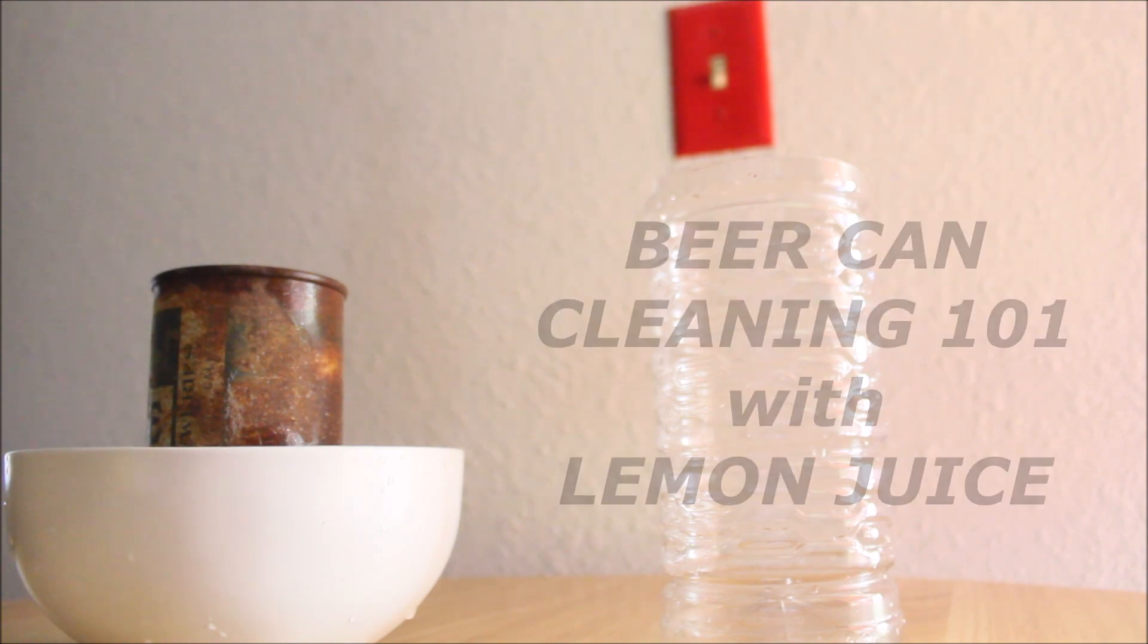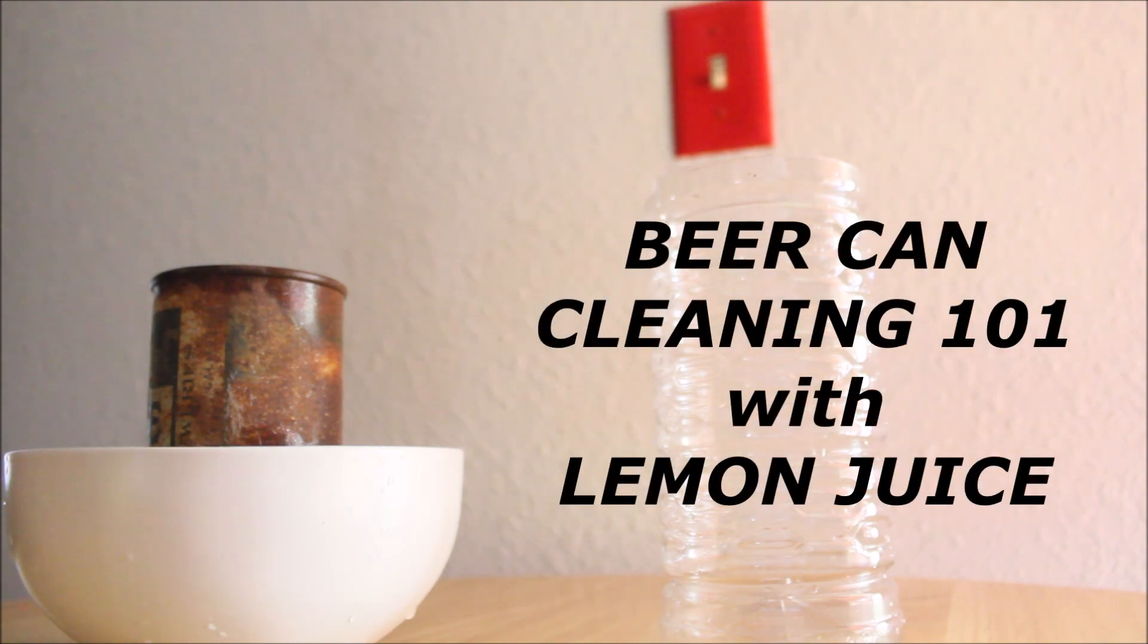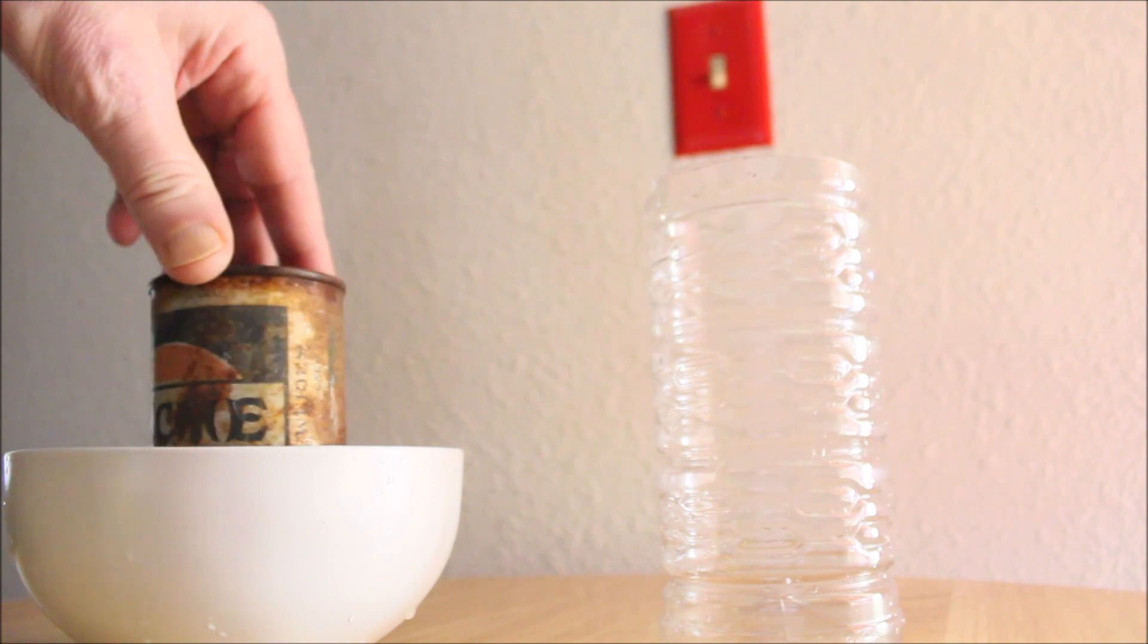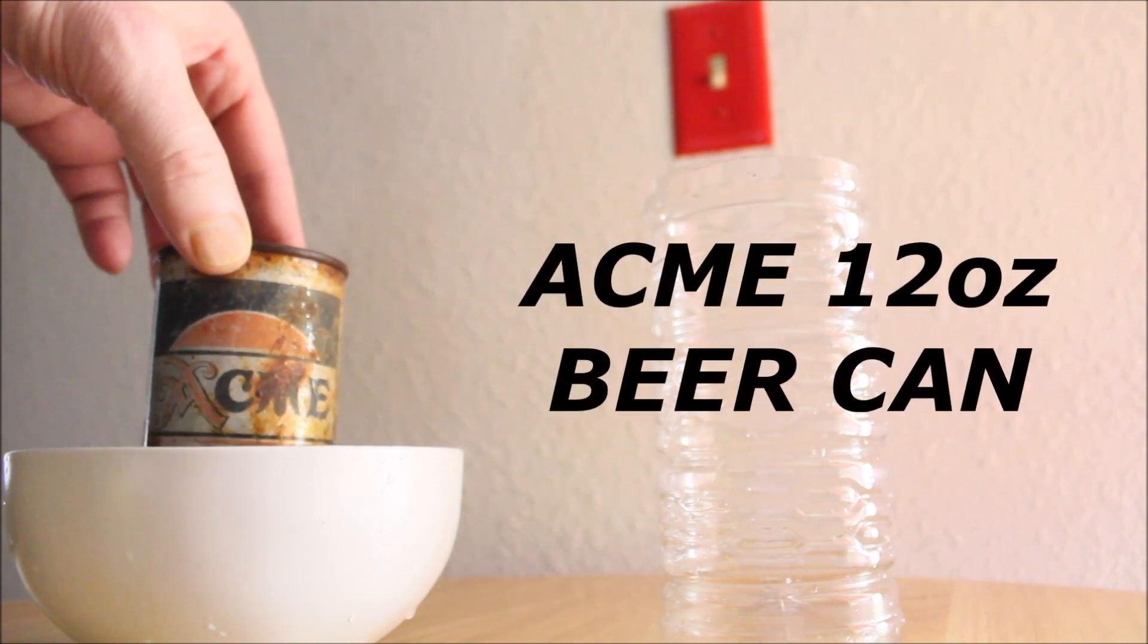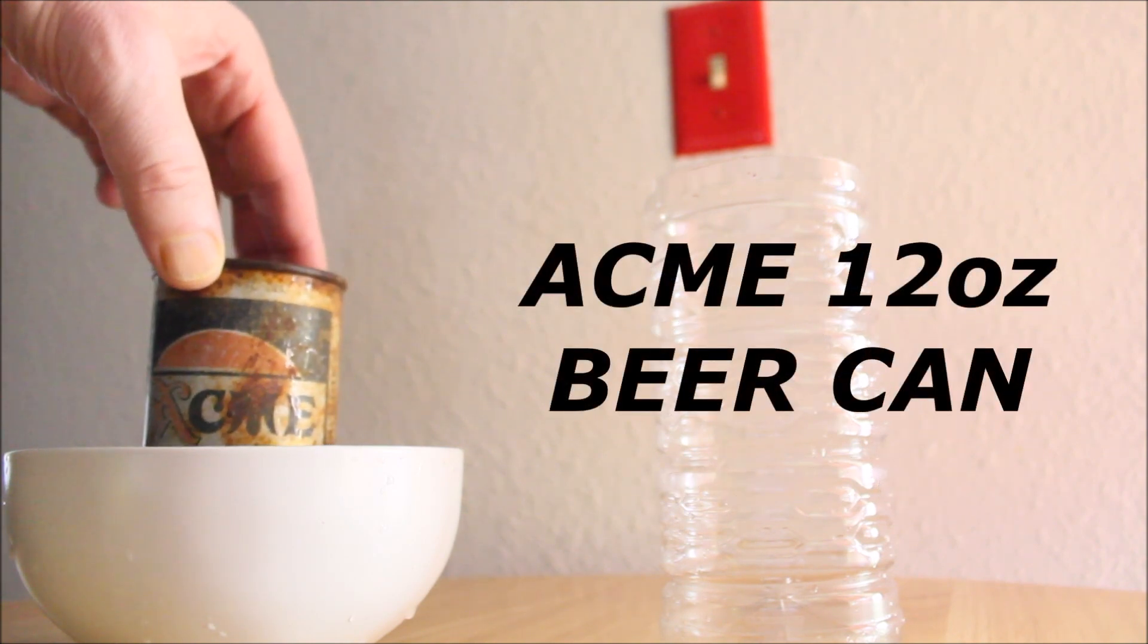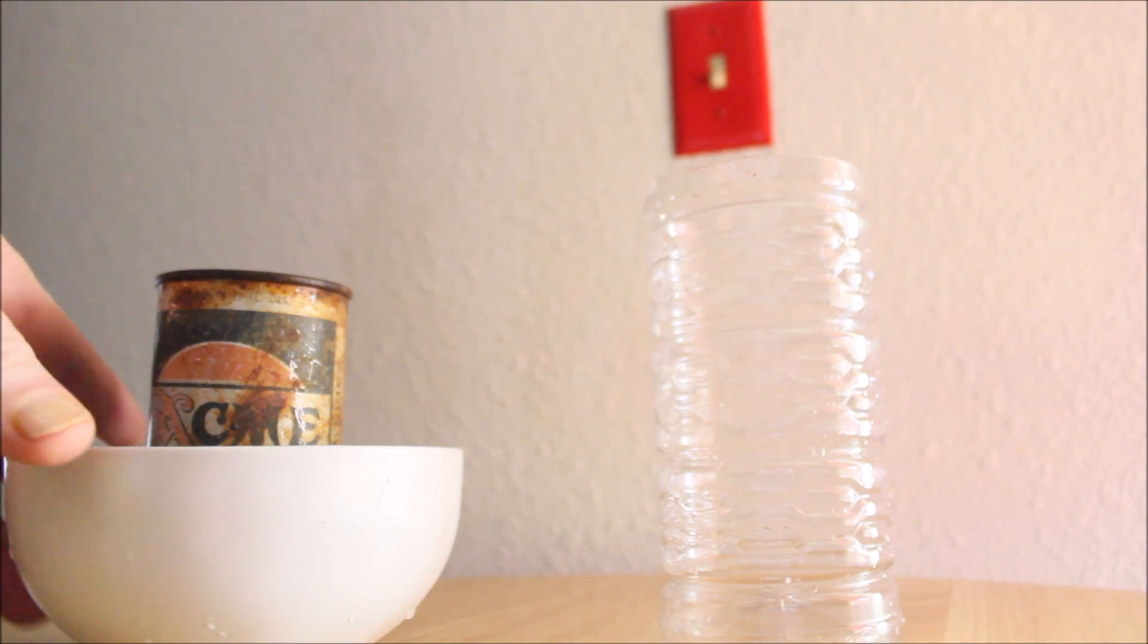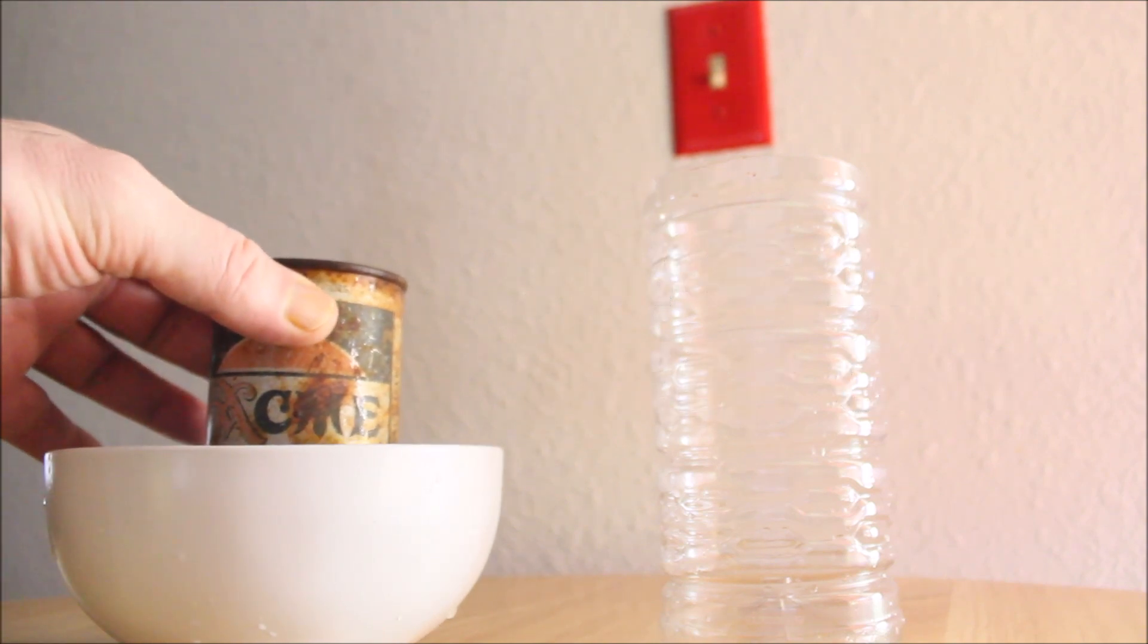Good afternoon and welcome to Beer Can Cleaning 101. Today's subject is an ACME beer can. It's pretty rotted on the bottom side, so we have it in a bowl to retain the water. When I flip it upside down into the plastic container, it will weight itself to the bottom of the plastic bottle.